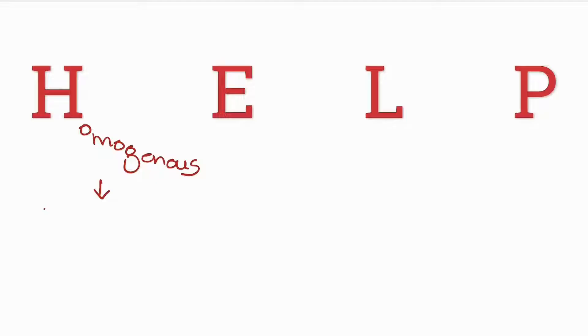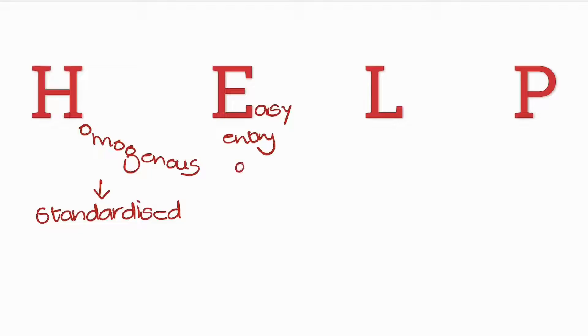Let's summarize everything we've looked at in terms of the characteristics. The first characteristic was the nature of the product — the product is homogeneous, meaning it is standardized and exactly the same in terms of appearance, packaging, and quality. The next characteristic was easy entry and exit into the market — it's easy for the firm to enter the market and equally easy for the firm to exit the market. The next characteristic was the large number of buyers and sellers, and that neither party has the capacity to influence the market.